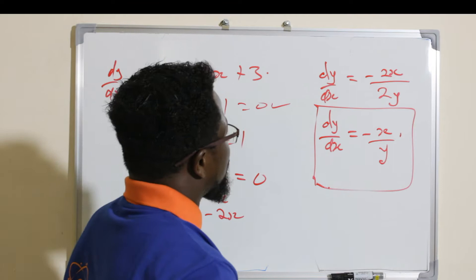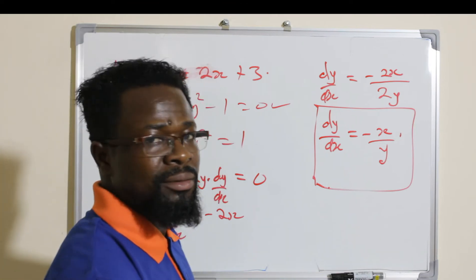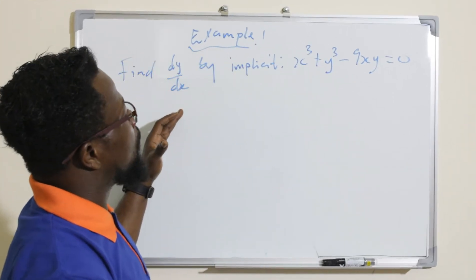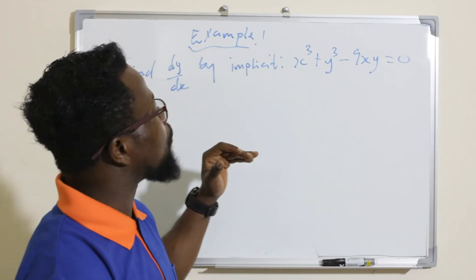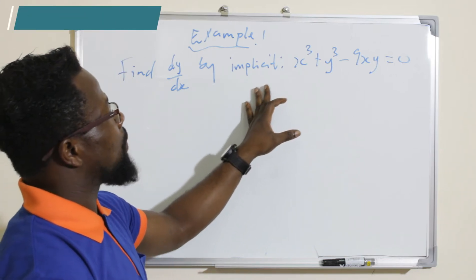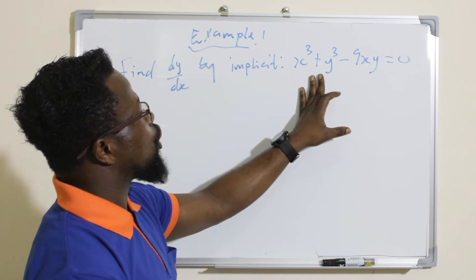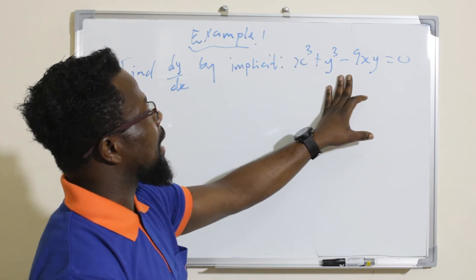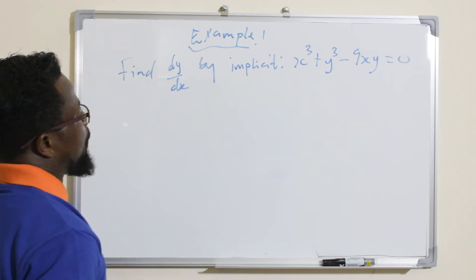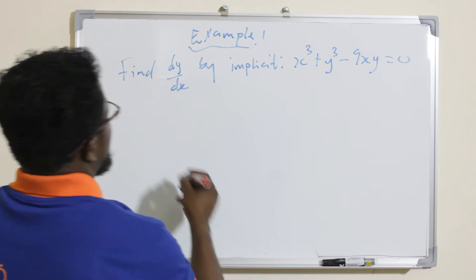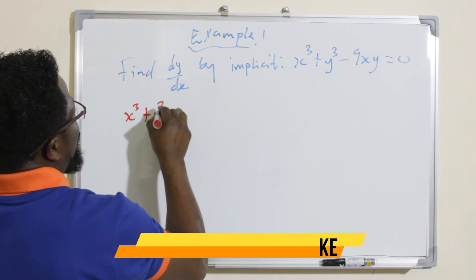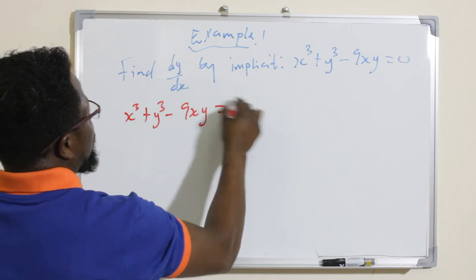Alright, let's look at further examples. Find dy/dx by implicit differentiation where x³ + y³ − 9xy = 0. We want to find dy/dx.